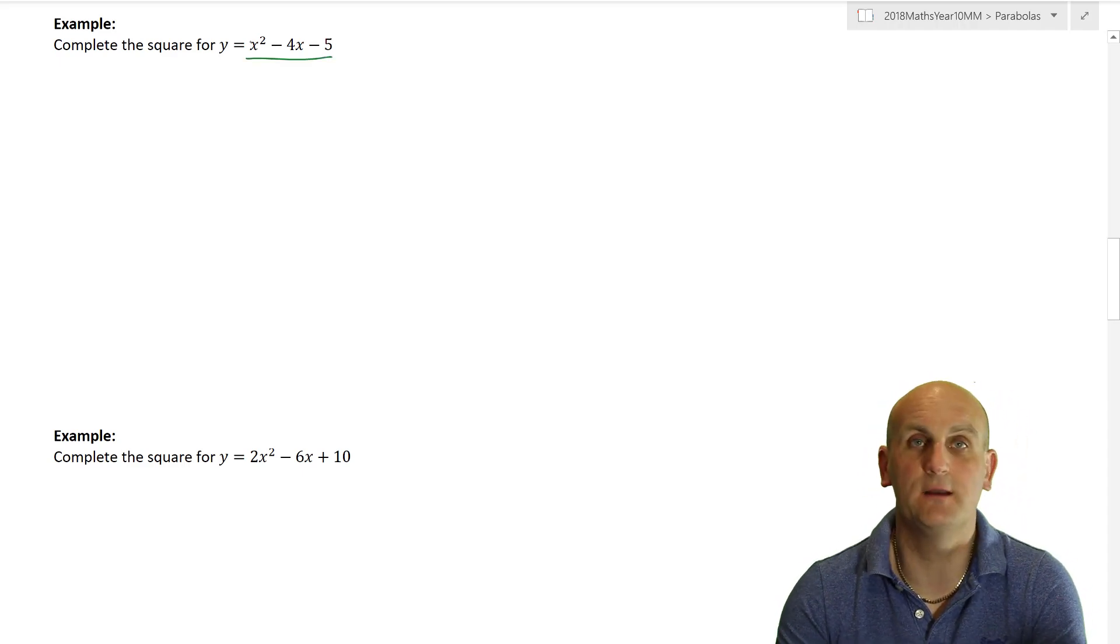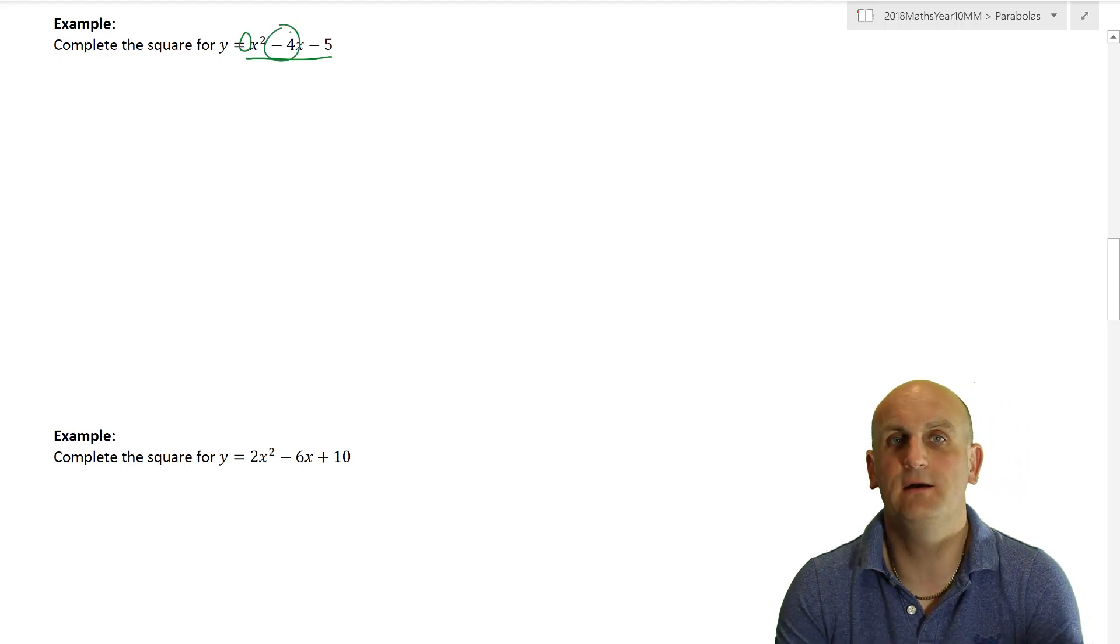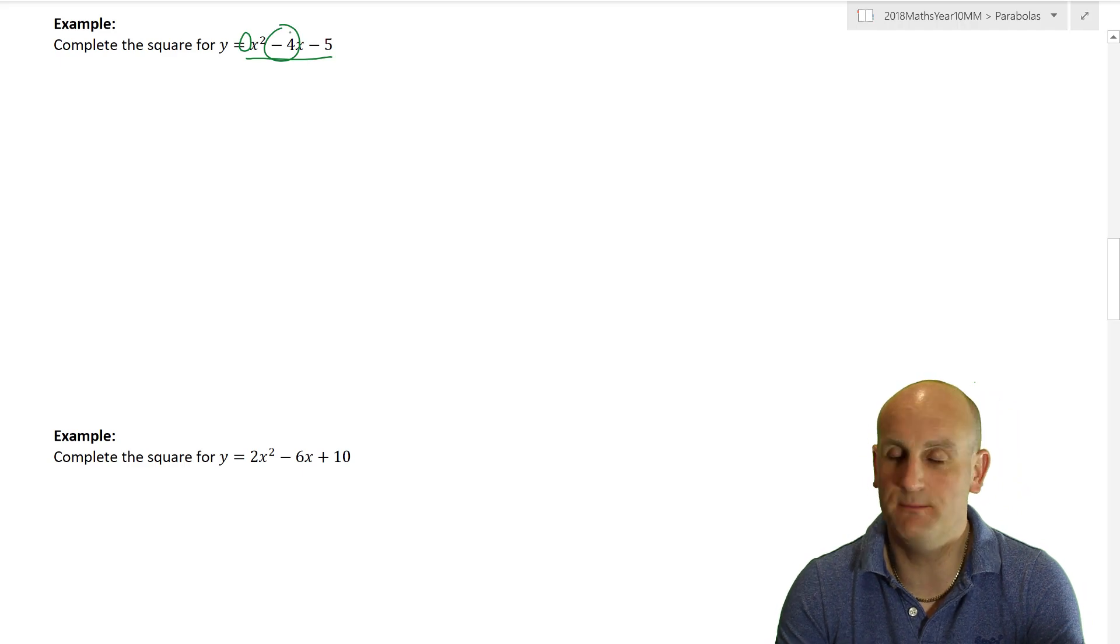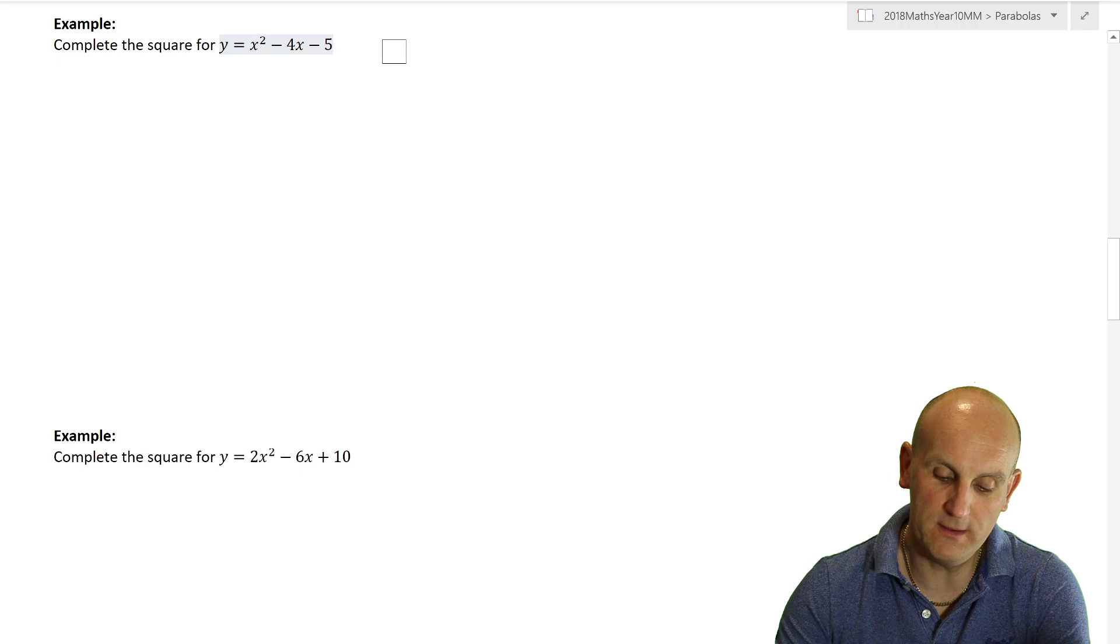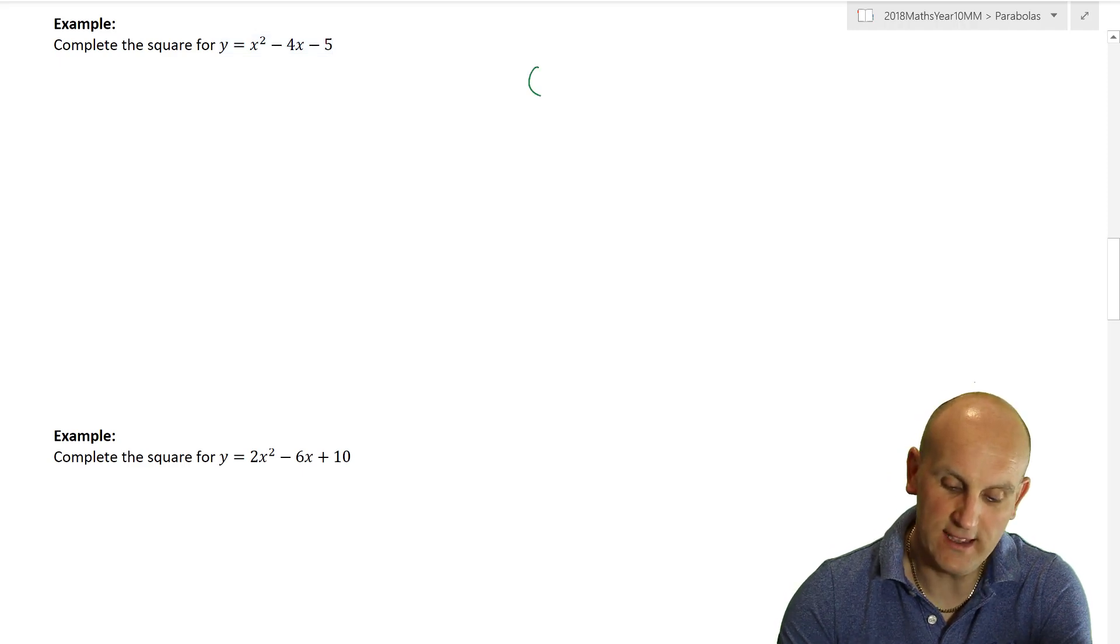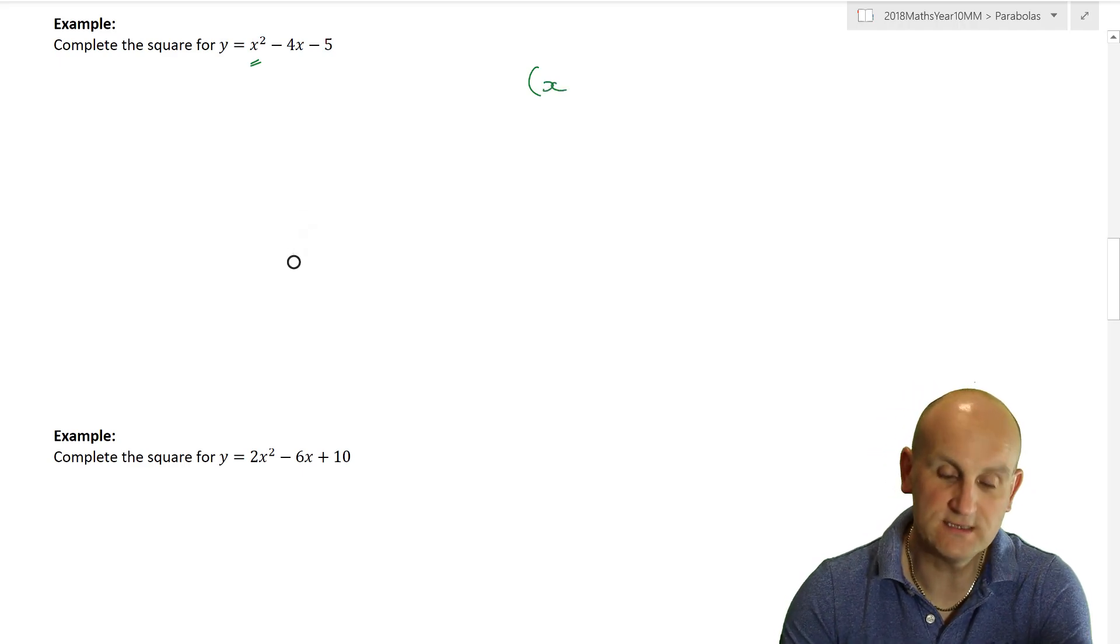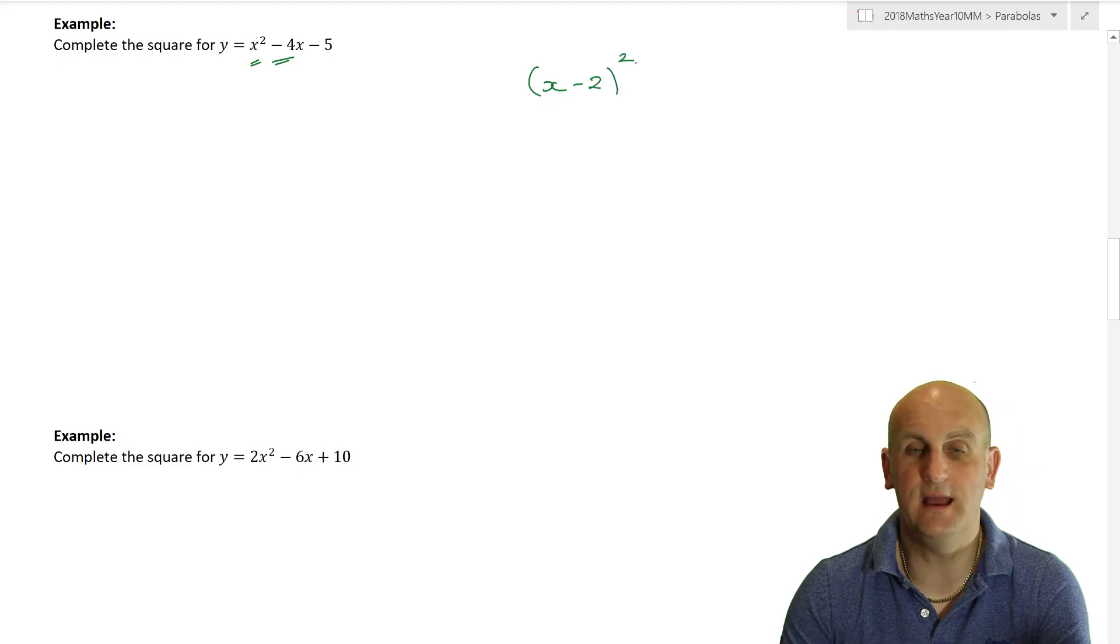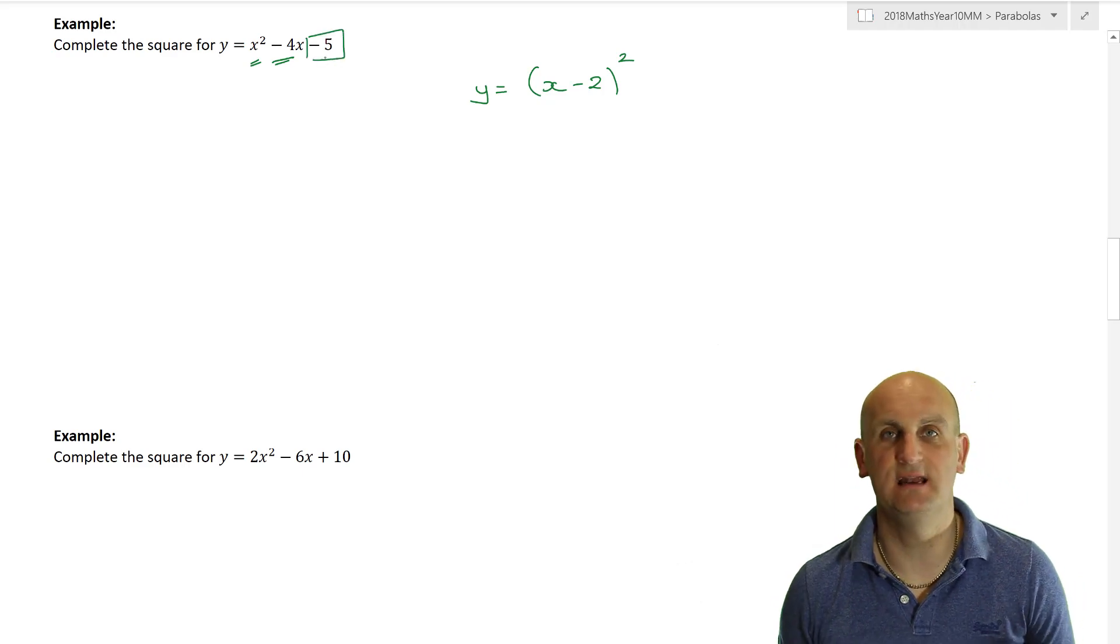The first things first is I like completing the square when the number in front of the x squared is a 1. And more importantly, when the middle number or that middle coefficient is an even number, be it positive or negative, doesn't actually matter to me. So I remember the rules are, set a bracket. If it's an x squared, write an x inside. Whatever this middle coefficient is, halve it and put the squared there.